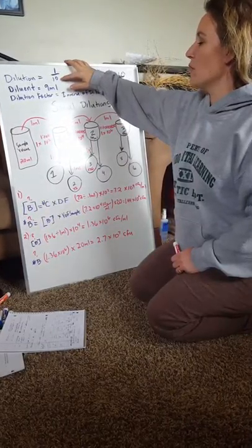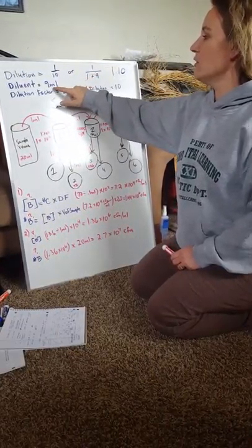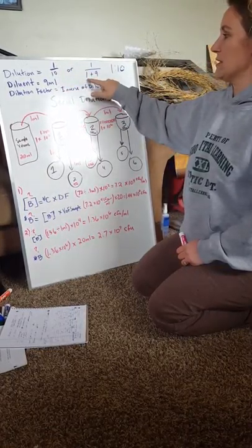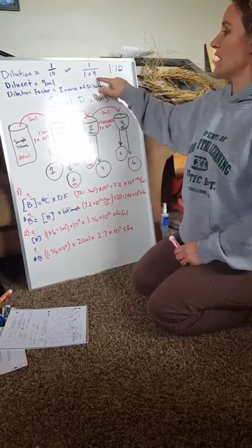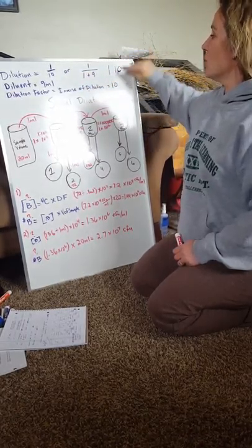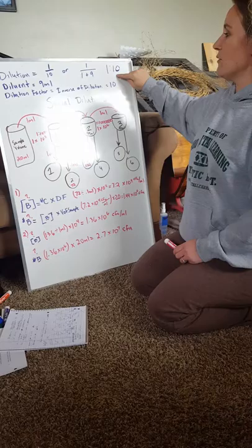The volume of the sample over the total volume. The diluent is how much we add to the volume of the sample, as you can see here, the volume of the sample plus the diluent to make the total volume. So it can also be expressed as a 1 to 10 ratio.